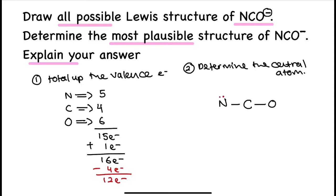Now, fill up the 12 electrons on the terminal atoms so that they reach octet. Counting 6 electrons as lone pairs, combined with the 2 bonding pair electrons, makes nitrogen octet. From the 12 electrons we have, minus 6 electrons gives us 6 more electrons. Fill up the electrons on oxygen — 6 lone pair electrons plus 2 bonding pair electrons make oxygen octet.